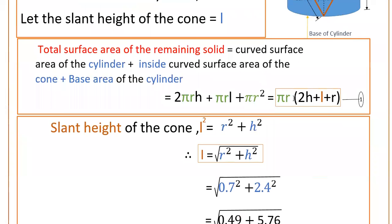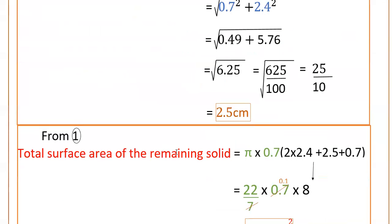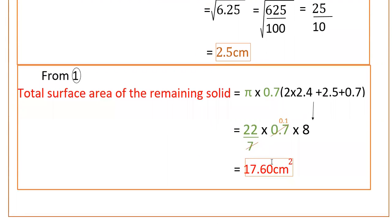Substituting into the equation: Total surface area = π × 0.7 × (2 × 2.4 + 2.5 + 0.7). Calculating this gives 17.60 cm². This is the total surface area of the remaining solid.